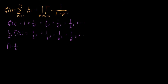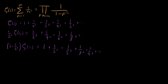If we do that, what do we have? We have (1 minus 1 over 2 to the s) times zeta of s, and what are we left with? We're left with 1 plus 1 over 3 to the s plus 1 over 5 to the s plus 1 over 7 to the s plus 1 over 9 to the s, and so on. What I've done is taken every single term in the series where n has 2 as a prime factor and removed it, so every single term on the right now doesn't have 2 as a prime factor.